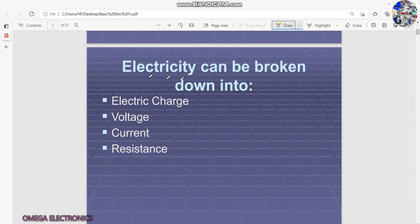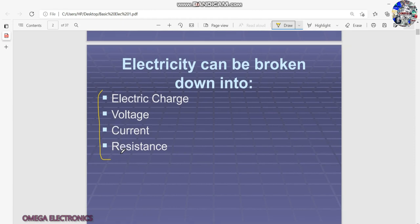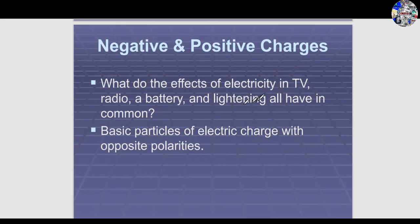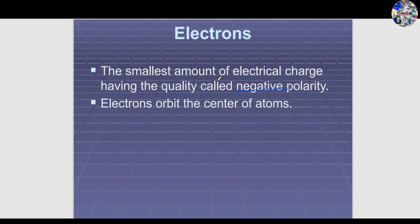Electricity can be broken down into four parts: electric charge, voltage, current, and resistance. In electricity, a battery and lightning have charge in common. There are broadly two types of charges: negative charge and positive charge.